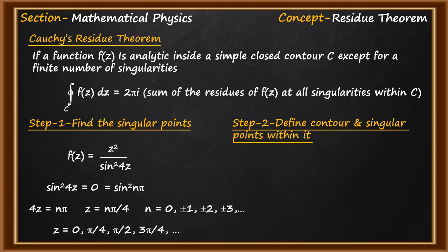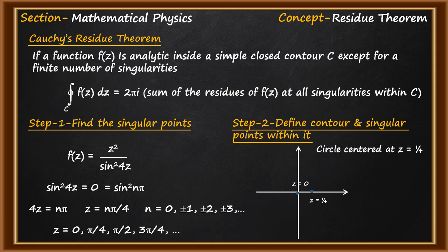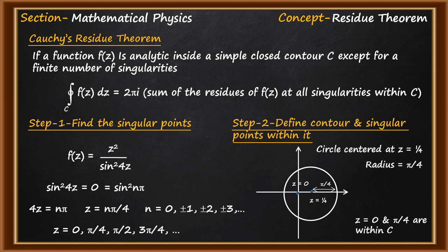Our contour is a circle, so let's draw it. The contour is a circle centered at z = 1/4 with radius π/4. From the center at z = 1/4, if we extend by π/4, we get our circle. If you look carefully, only the points z = 0 and z = π/4 are the two points which are within the circle. For the calculation of the contour integration using the residue theorem, we only need these two points: z = 0 and z = π/4.